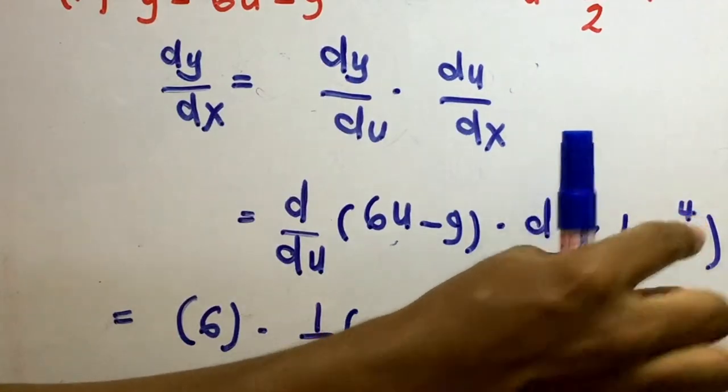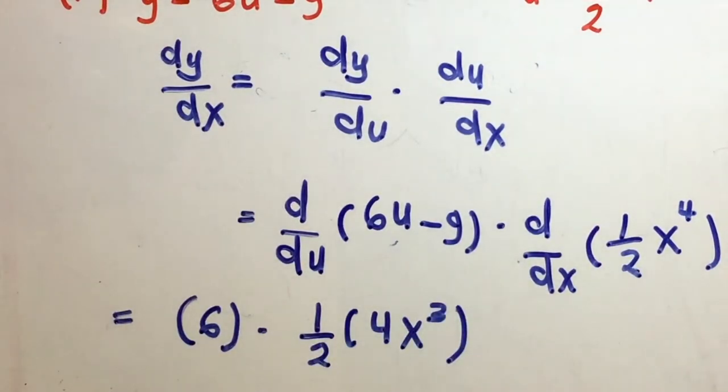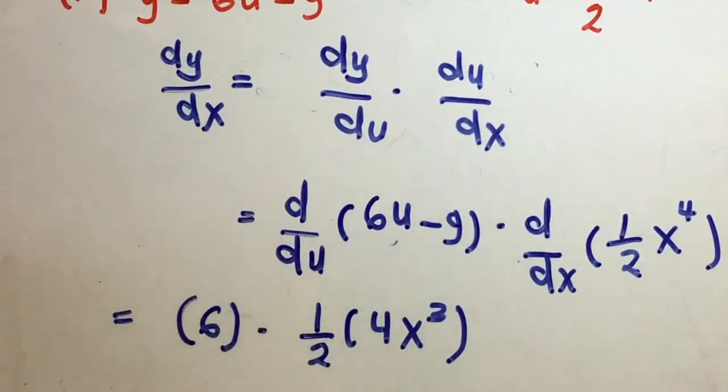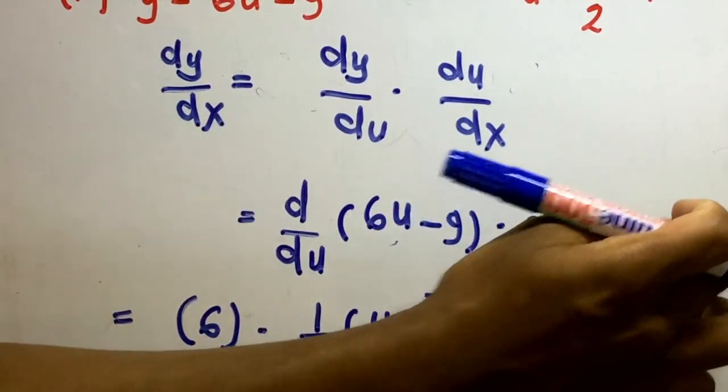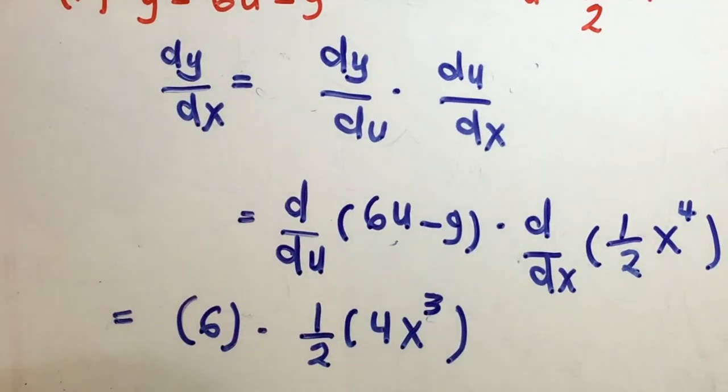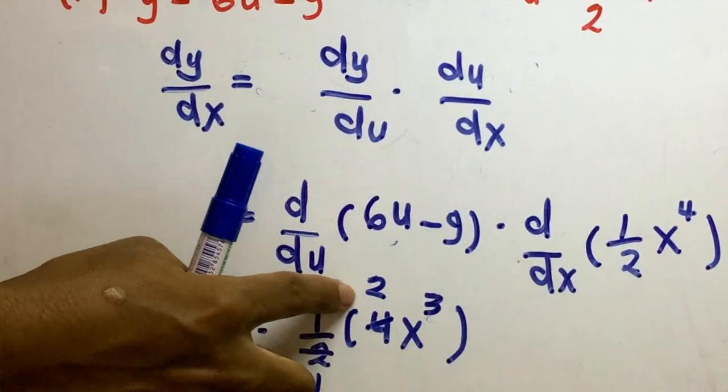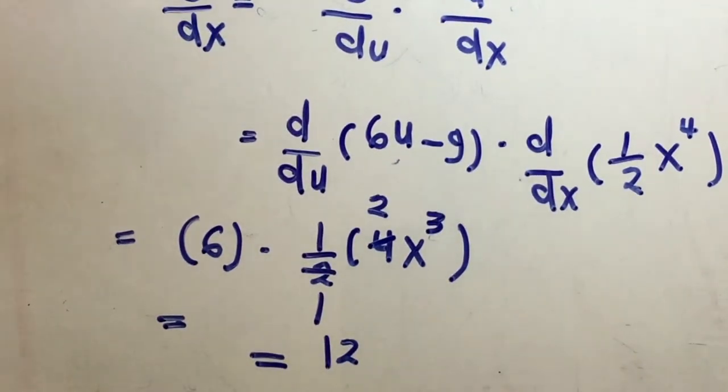One-half is a constant, so we have 4x cubed. The power of 4 comes down and multiplies: 4 times one-half equals 2. So we get 6 times 2x cubed, which gives us the final answer of 12x cubed.